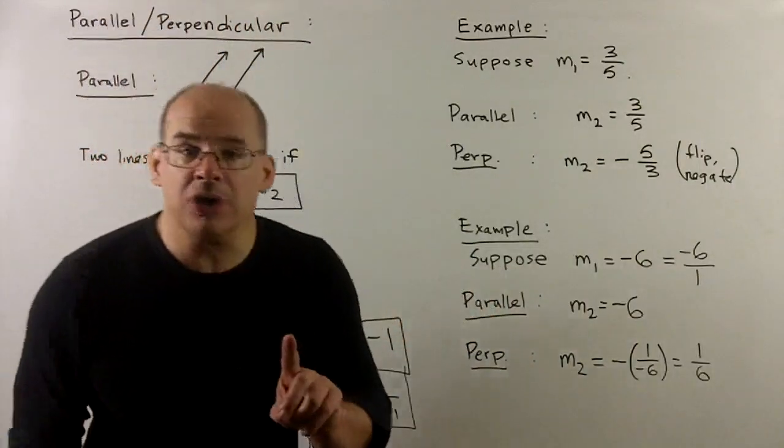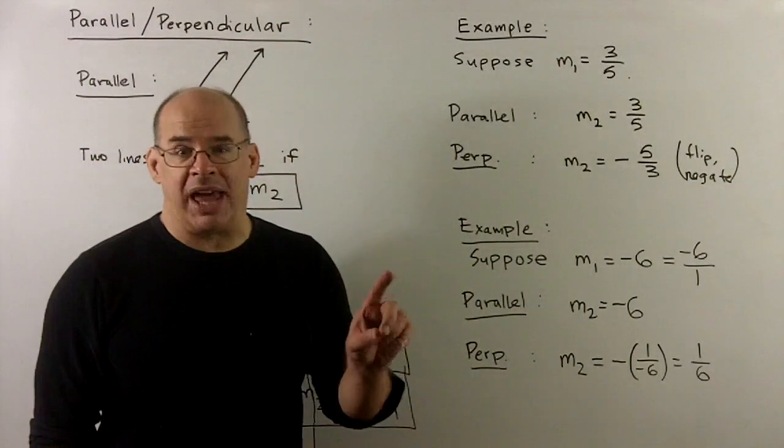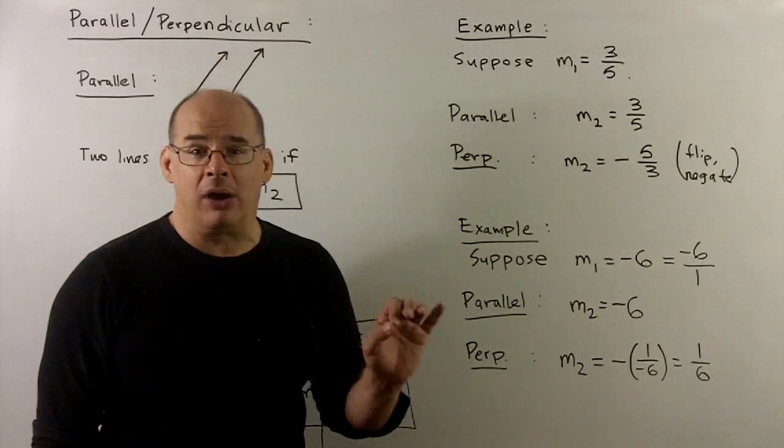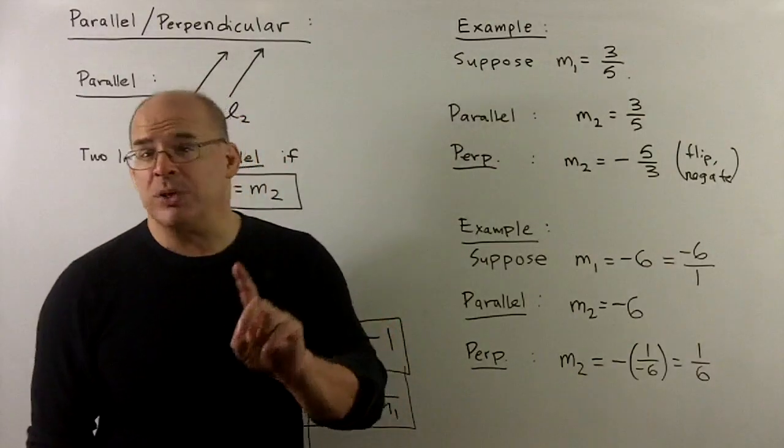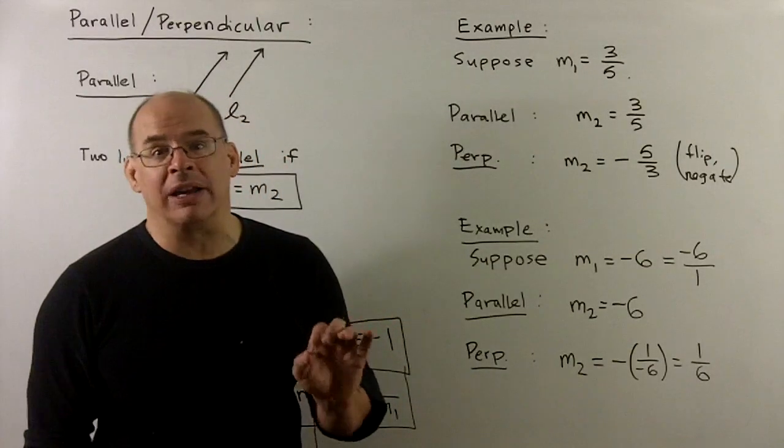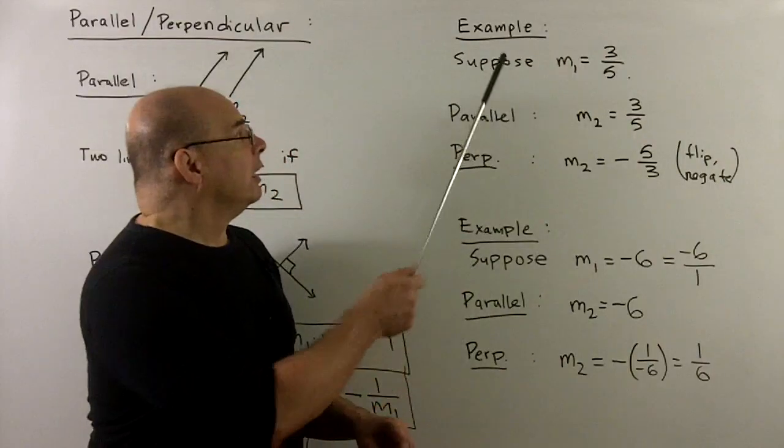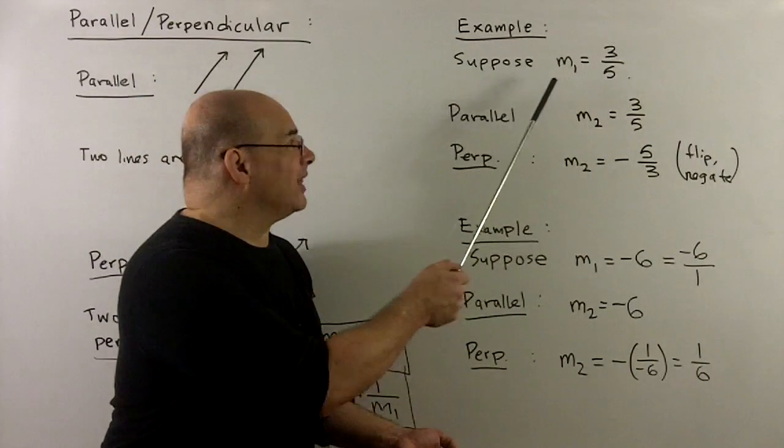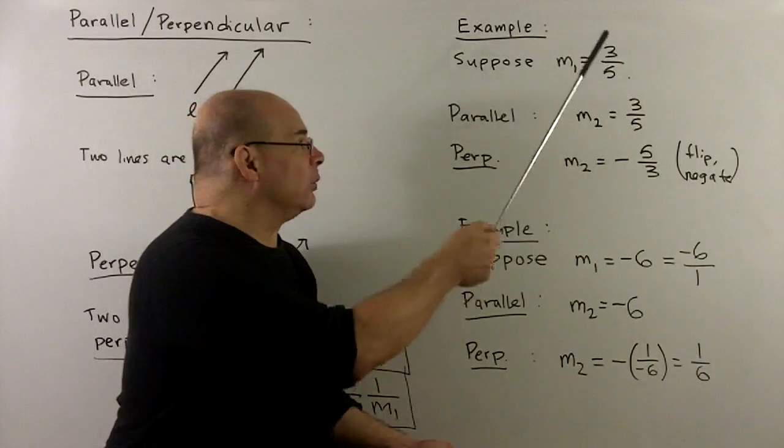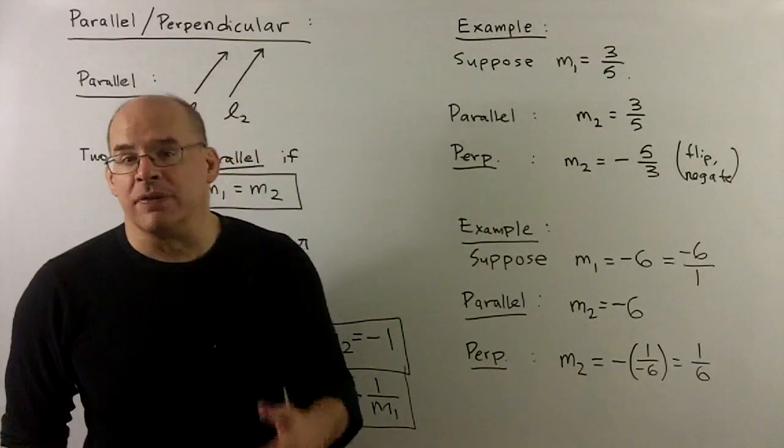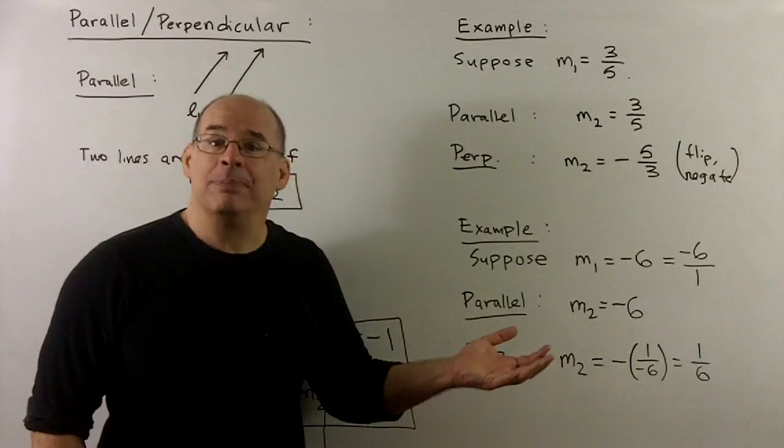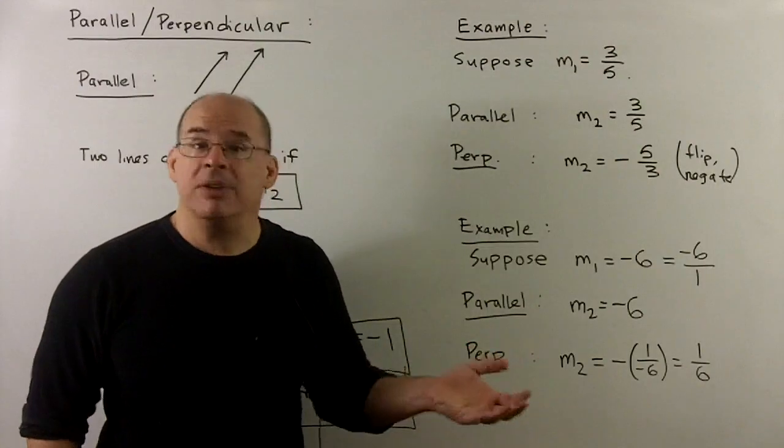Now, let's first just work with slopes and keeping straight what we do at parallel and perpendicular. Because we don't do anything with parallel, this is very easy to forget. Now let's suppose we're given the slope of one line is given by m₁ equal to 3/5. So, if I have a parallel line to this line, the slope is just the same, it's 3/5.